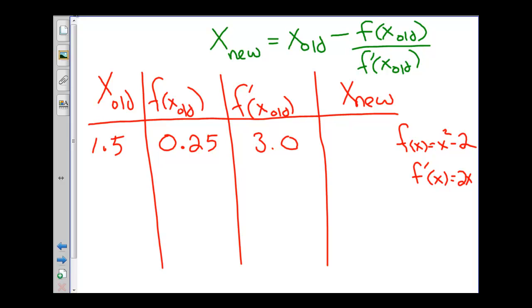So our x new now will be our x old, which is 1.5 minus f of x old, which is 0.25 divided by 3. Or our x new is 1.5 minus 0.25 divided by 3. That gives us a value of 1.41667.